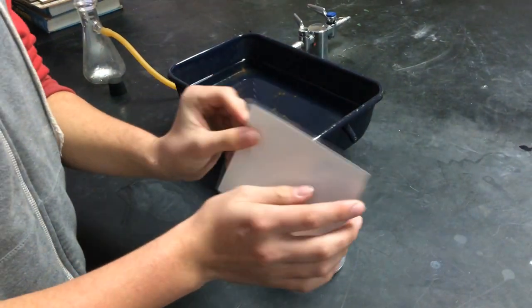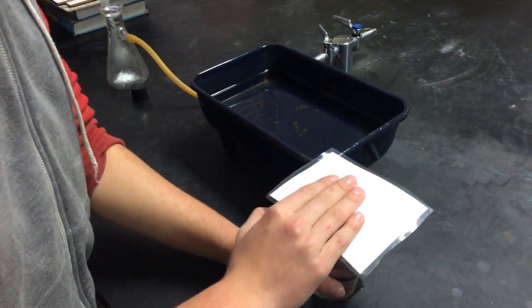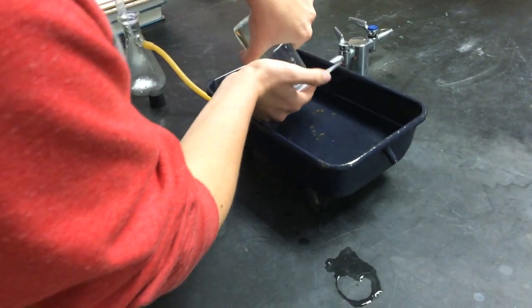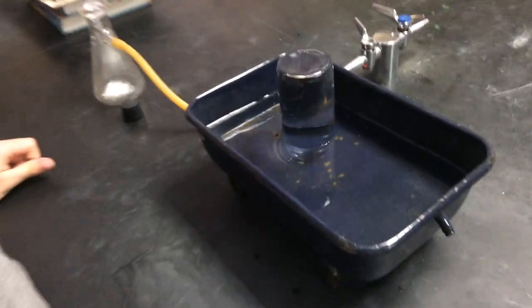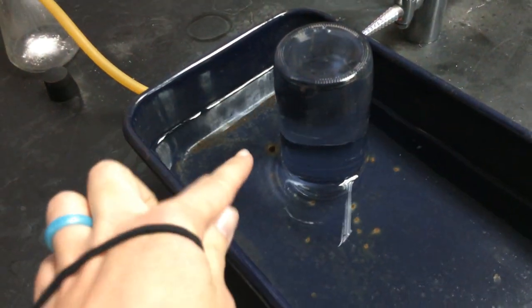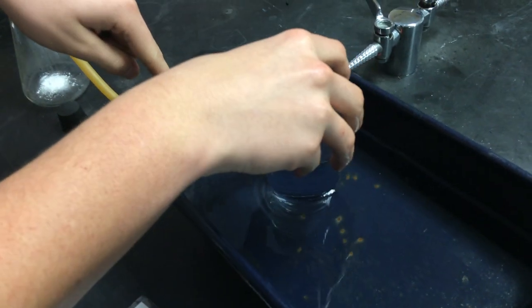You're going to use a laminated note card and slowly, while pushing down on it, flip that into the trough. And there is a hole that we're gonna center the jar over.